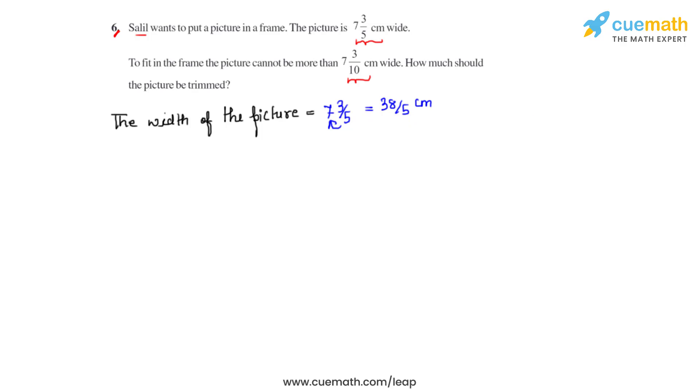Now the required width of the picture cannot be more than 7 3/10 centimeters wide. This is a mixed fraction, so we'll convert this into an improper fraction. To do that, we'll multiply 10 with 7 and add it with 3. 10 times 7 is 70, 70 plus 3 is 73, so we get it as 73/10 centimeters.